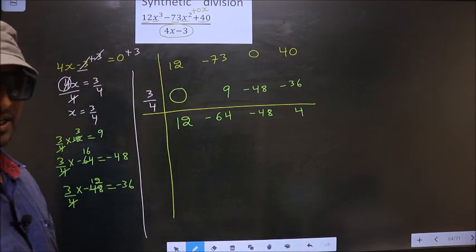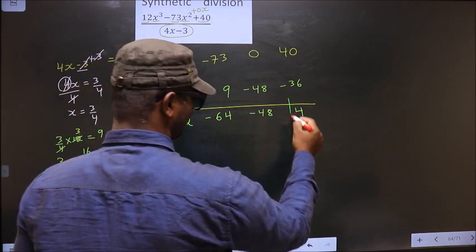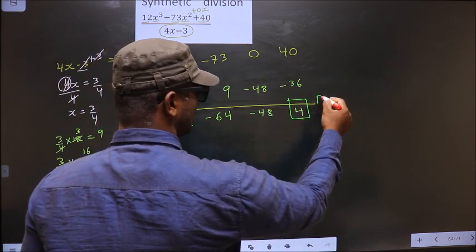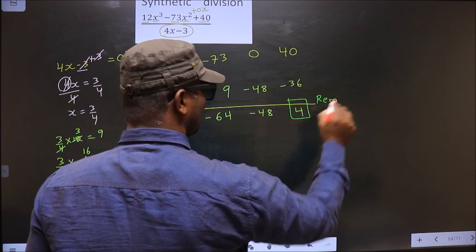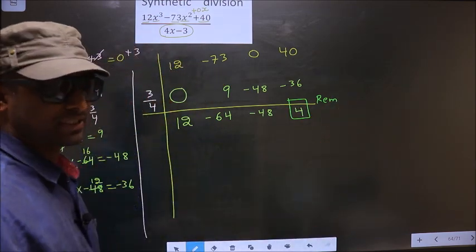Now once you have done till here, then the last number will be your remainder. Always. Last number will be your remainder.